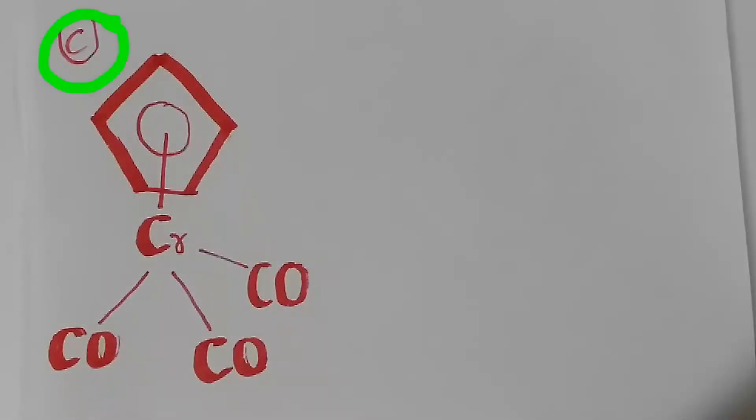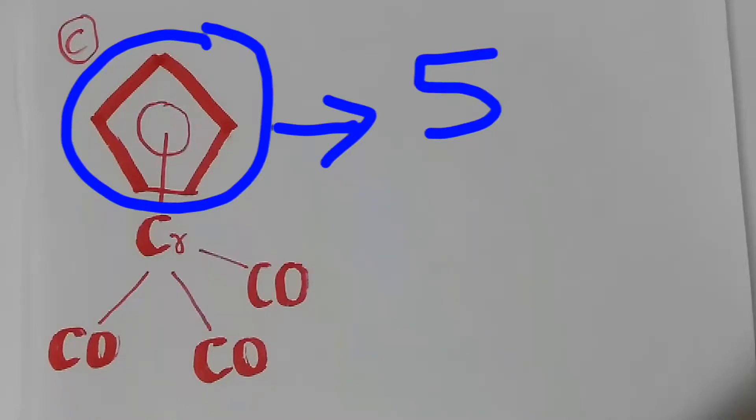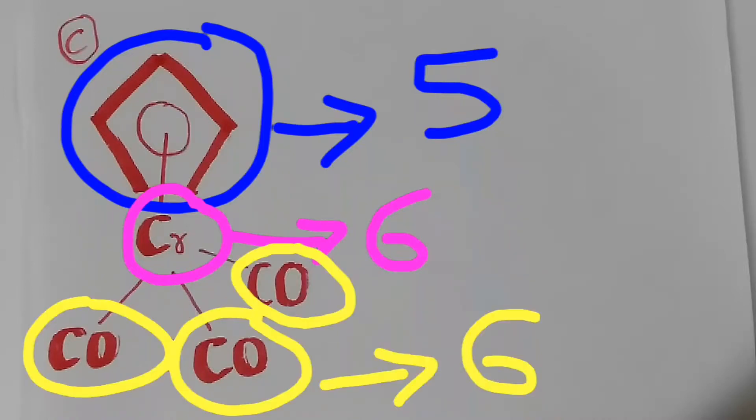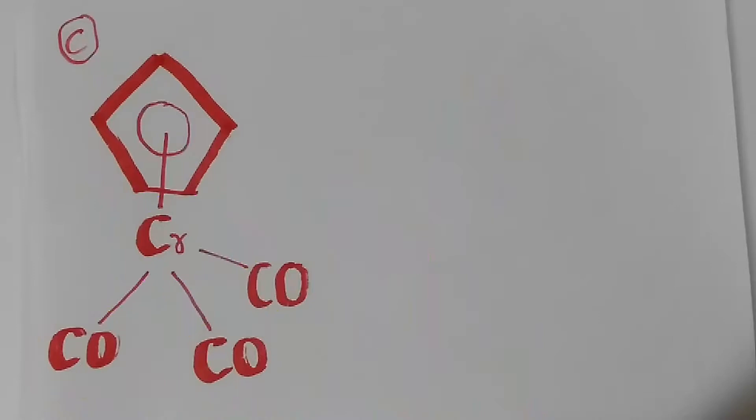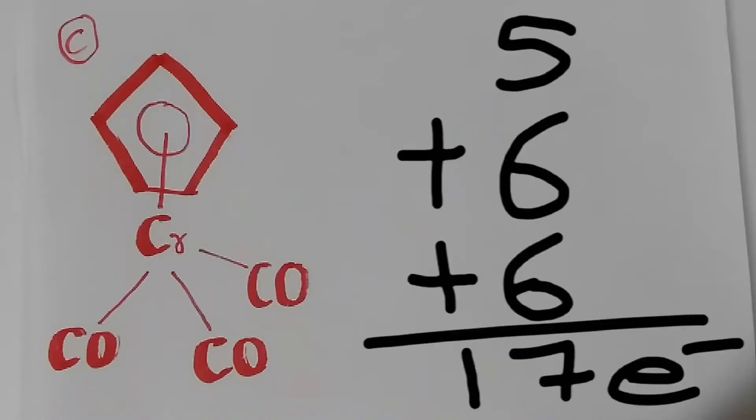In the compound C, this ring again donates 5 electrons. Chromium will donate 6 electrons. The 3 carbonyl will donate 6 electrons. So the total electron count will be 17. And this is the wrong choice.